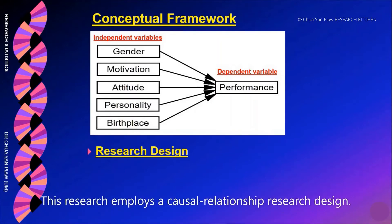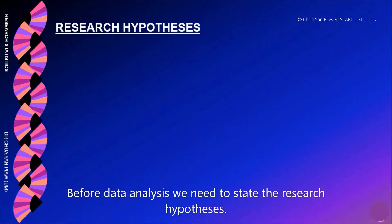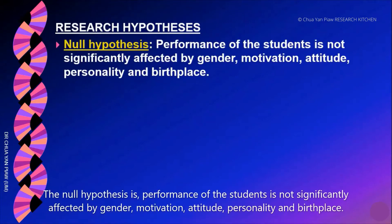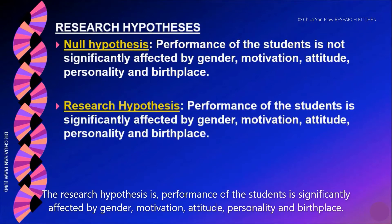This research employs a causal relationship research design. Before data analysis, we need to state the research hypothesis. The null hypothesis is: performance of the student is not significantly affected by gender, motivation, attitude, personality, and birthplace. The alternative hypothesis is: performance of the student is significantly affected by gender, motivation, attitude, personality, and birthplace.